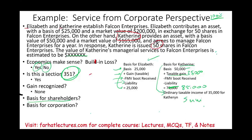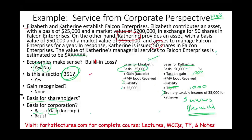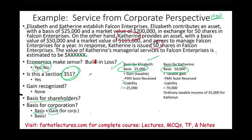That $35,000 for Catherine is taxable income for the services provided. Now let's look at the basis for the corporation. The corporation's basis is the transferred basis plus any gain recognized by the corporation. There was no gain recognized, so the corporation's basis in the assets is simply the contributing shareholders' bases: $25,000 for Elizabeth's asset and $50,000 for the asset contributed by Catherine.